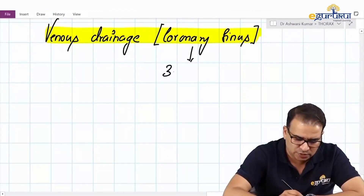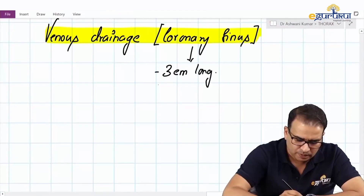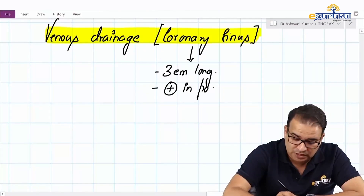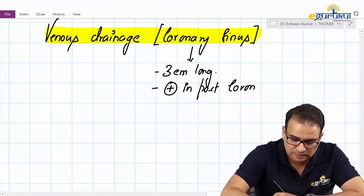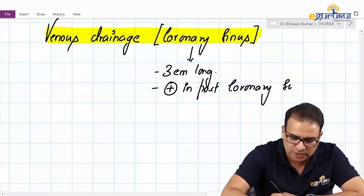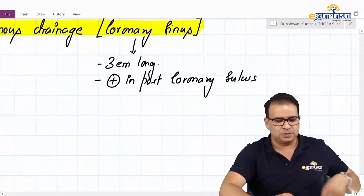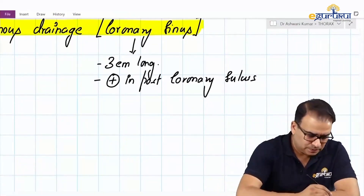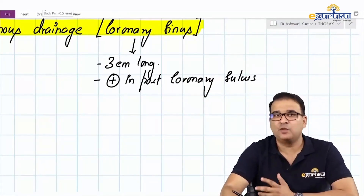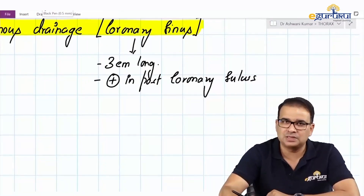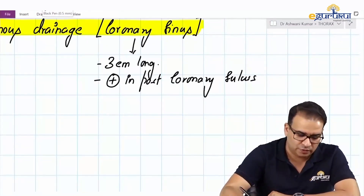The coronary sinus is approximately three centimeters long and is situated in the posterior coronary sulcus — also called the posterior atrioventricular groove. Both terms refer to the same structure.